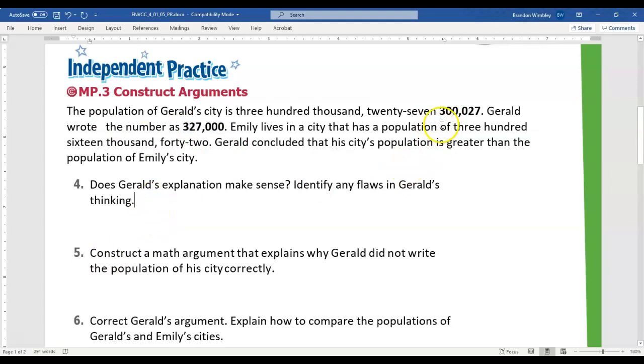So, does his explanation make sense? Is his city actually bigger when it's this size? No, his explanation doesn't make sense. So what we're going to put is this: Gerald did not write the population of his city correctly. And I'm going to go back and spell check when I'm all done. He did not write the digits in the correct place.